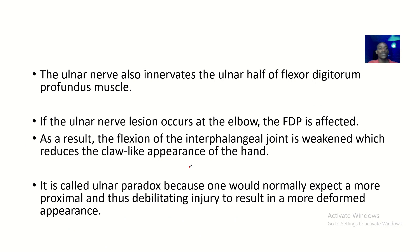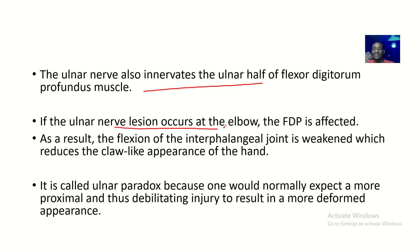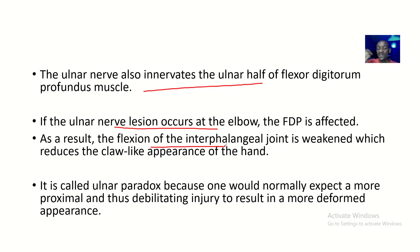The ulnar nerve also innervates the ulnar half of the flexor digitorum profundus. So if the ulnar nerve lesion occurs at the elbow, the flexor digitorum profundus is affected. As a result, the flexion of the interphalangeal joint is weakened.